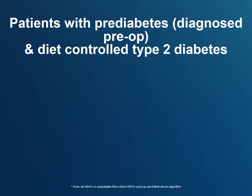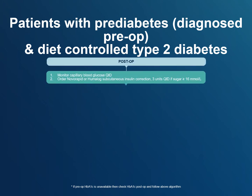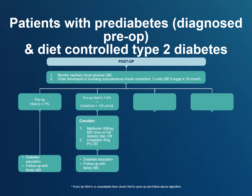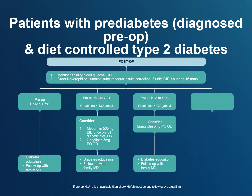Pre-diabetes and diet-controlled type 2 diabetes: Order QID capillary blood glucose monitoring and three units of rapid correction insulin with each meal and at bedtime if the glucose level exceeds 16 millimoles per liter. Then find the pre-operative hemoglobin A1c level, or order a hemoglobin A1c if none is available in the last three months. If the pre-operative hemoglobin A1c is less than 7%, continue the above orders. If the hemoglobin A1c is between 7 and 9%, the patient may need medication to treat their diabetes. Consider starting metformin 500 milligrams BID if creatinine is less than 130, or use linagliptin 5 milligrams per day. Linagliptin may be used even if the patient has renal failure.